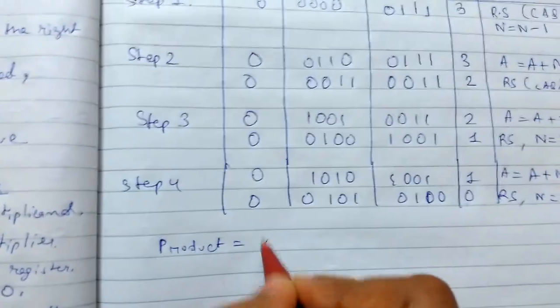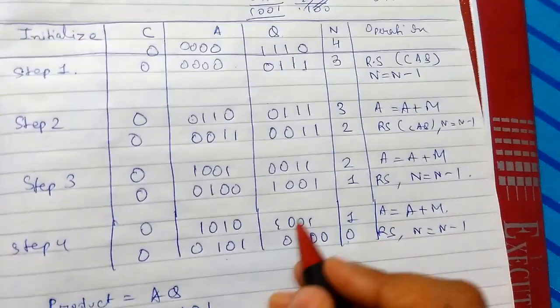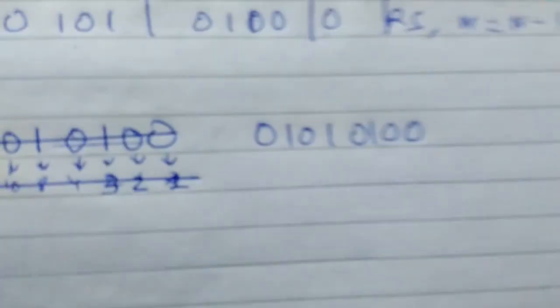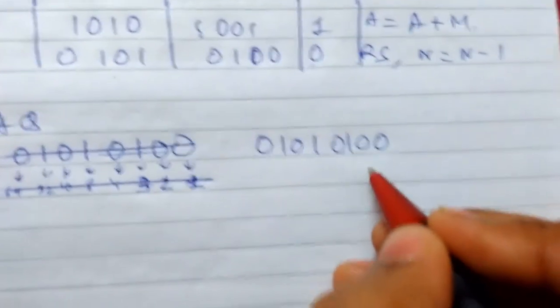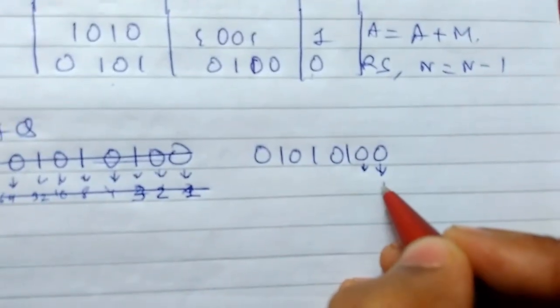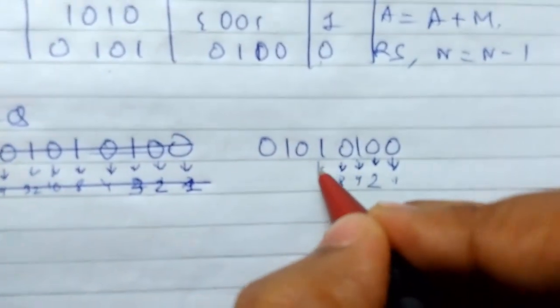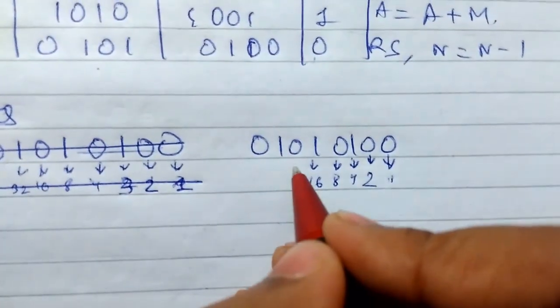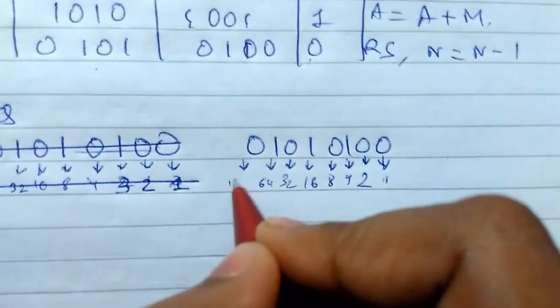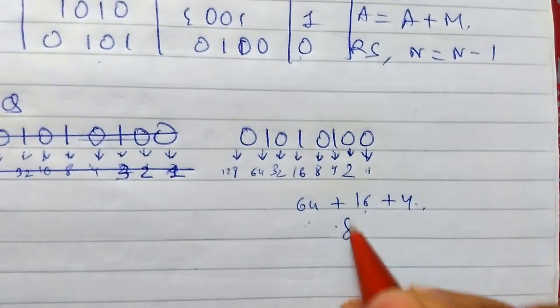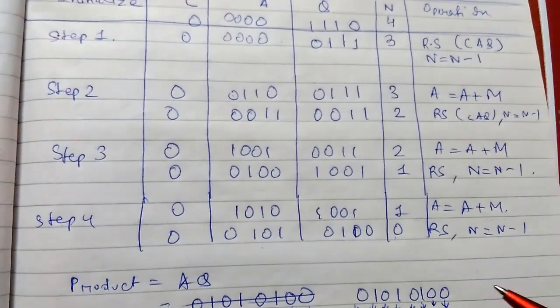The product equals A concatenated with Q, in that order. A is 0101 and Q is 0100 0, giving the 8-bit result 01010100. Since 6 × 14 = 84, let's verify: the bits represent 64 + 16 + 4 = 84. The result is confirmed correct. This is how you perform multiplication using sequential unsigned binary multiplication. Thanks for watching.